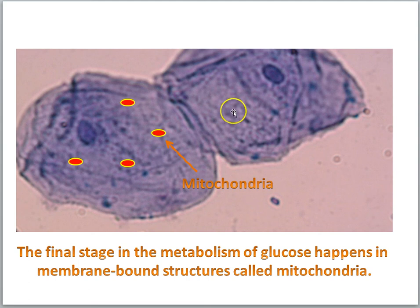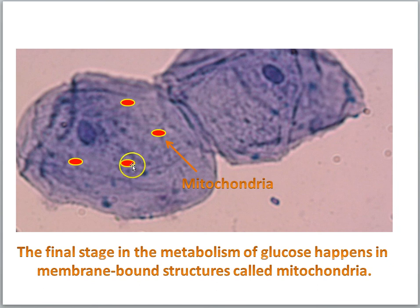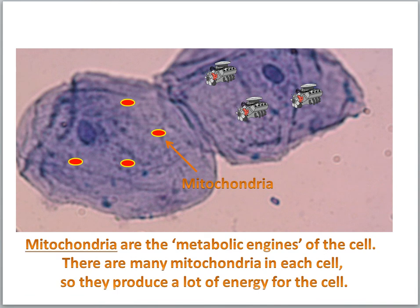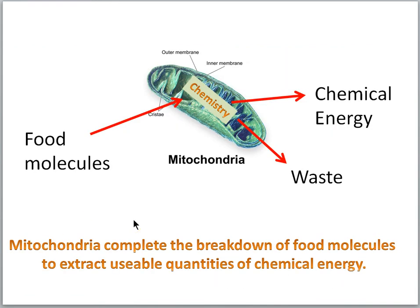Mitochondria cannot be seen in the pictures of our cheek cells here, so I've put these little icons in. They are membrane-bound structures where the final stages of glucose metabolism occur. We're going to compare mitochondria to metabolic engines of the cell. There are many mitochondria in each cell, so they produce a lot of energy for the cell. In a simplified fashion, the mitochondria complete the breakdown of food molecules to extract usable quantities of chemical energy.